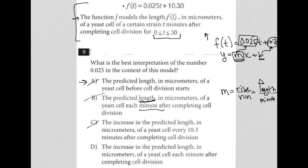Choice D, the increase in the predicted length in micrometers of a yeast cell each minute after completing cell division. Absolutely correct. Each minute, that's our run, there's going to be an increase in the length. That increase in length will be 0.025. So choice D is the best answer.